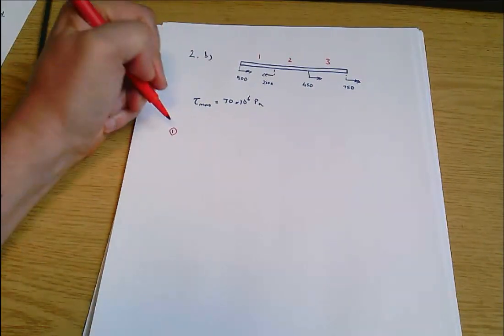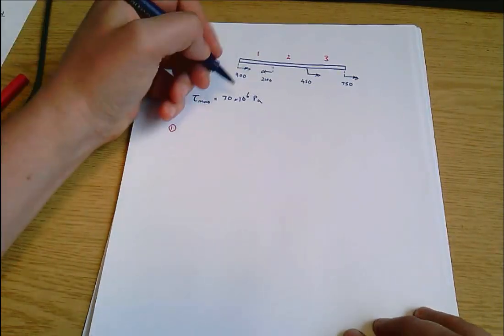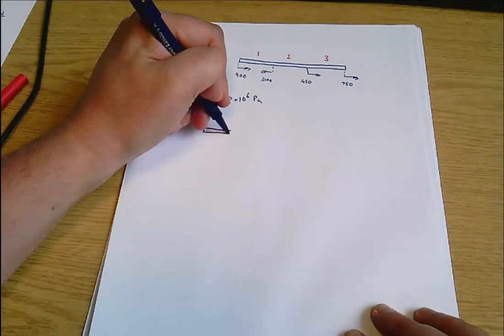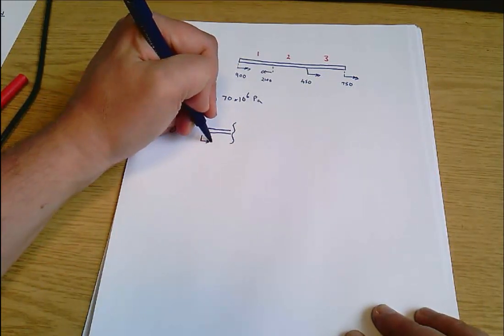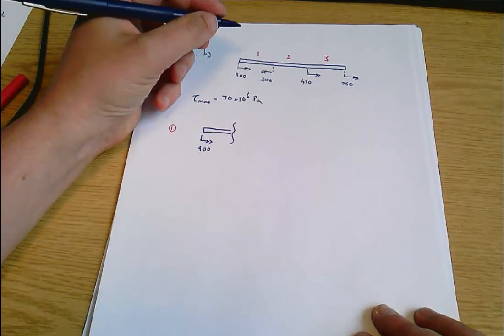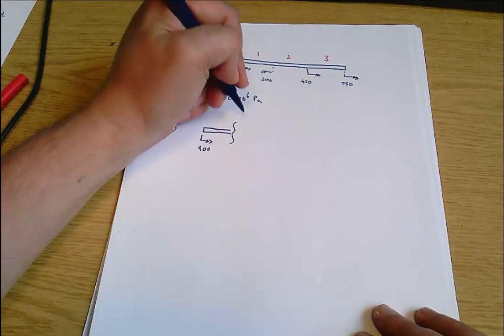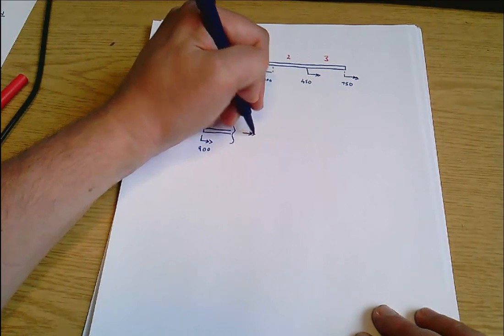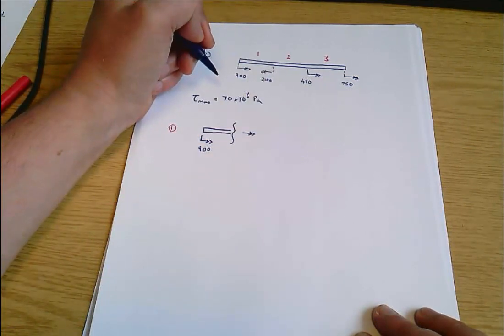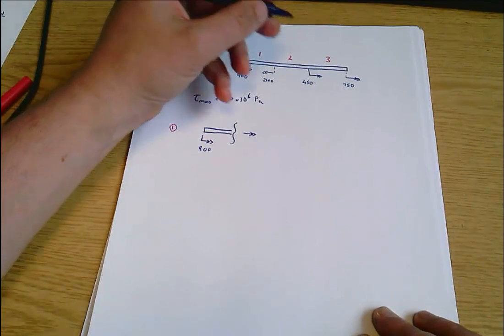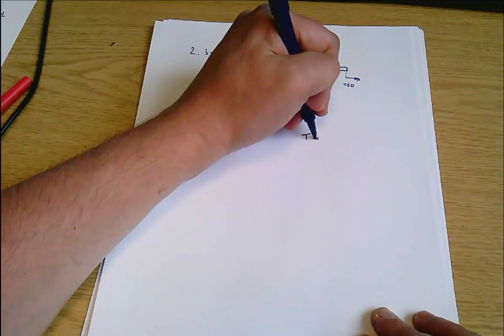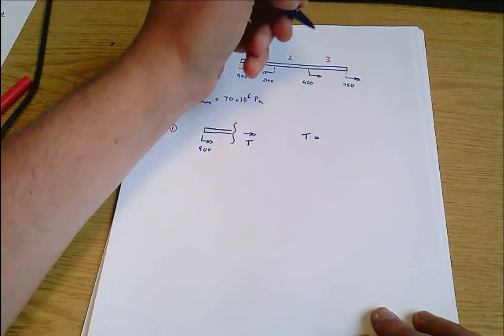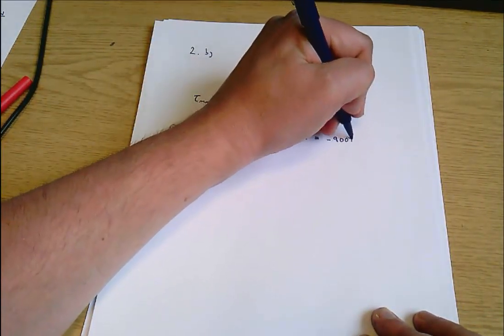In section one, if I just draw my shaft with an imaginary cut, we know there's 900 newton meters acting that way. And so if I draw on a torque acting at my imaginary cut, that must be the torque within the shaft at that point. By torque equilibrium, that torque equals negative 900 newton meters.